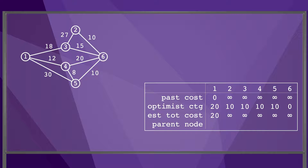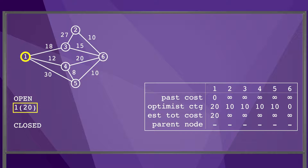The estimated total cost is 20 for node 1 and infinity for all other nodes. The parent node of node i is the previous node on the best-known path to node i. Node 1 has no parent node, and we don't know of any paths to the other nodes yet. Now we define two lists: Open, a list of nodes to explore from, and Closed, a list of nodes we have already explored from. We initialize the Open list with node 1, the start node, with an estimated total cost of 20. Now we begin the search by exploring from the first node in Open.